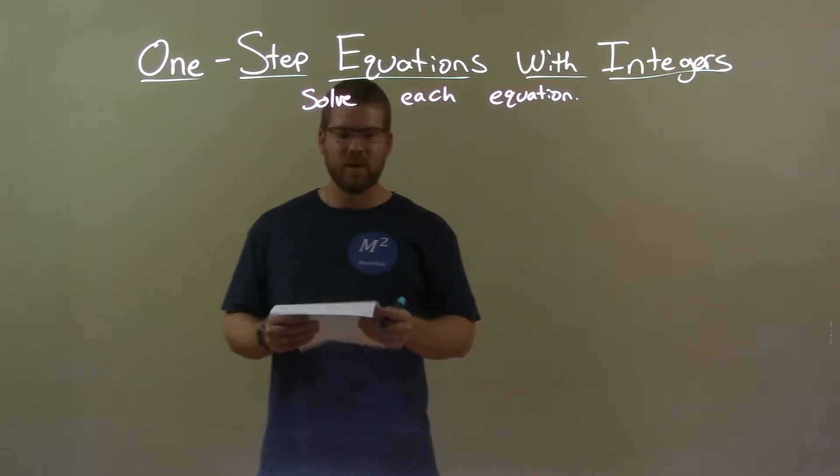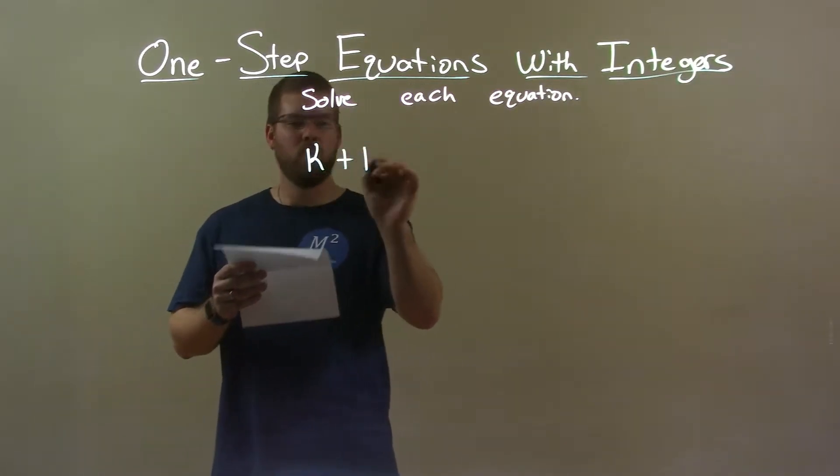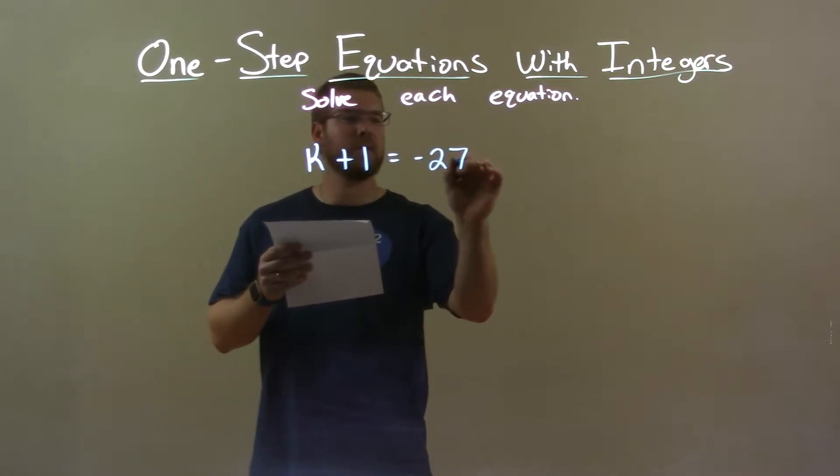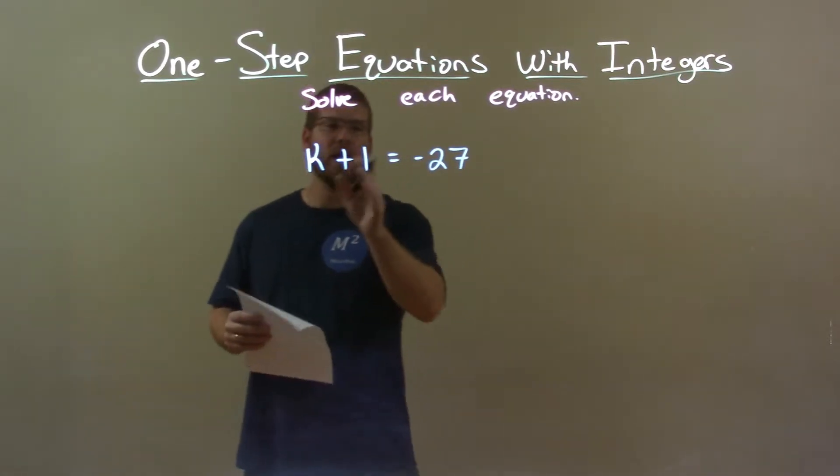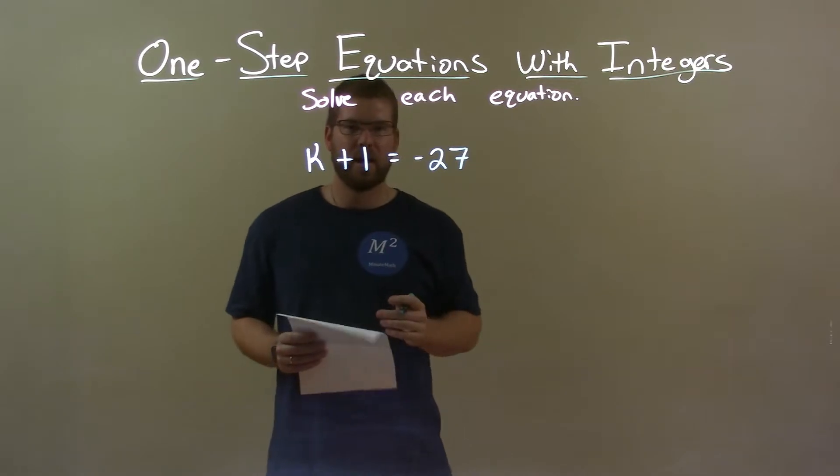If I was given this equation, k plus 1 equals negative 27. We have k plus 1 equals negative 27. I want to get k by itself.